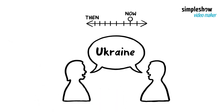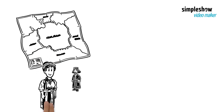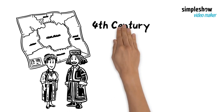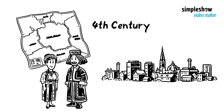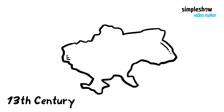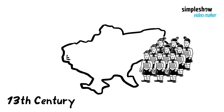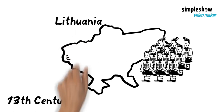Let's talk about the history of Ukraine. The area belonging to Ukraine today had been inhabited by Slavic tribes since the 4th century AD, with Kyiv as its chief town. In the mid-13th century, the Mongols conquered the area. For the next 450 years, portions of Ukraine were ruled by Lithuania, Poland, and Russia.